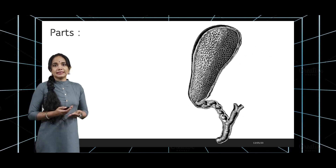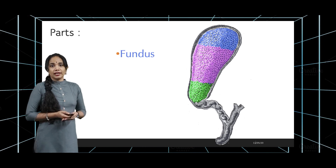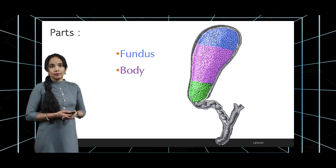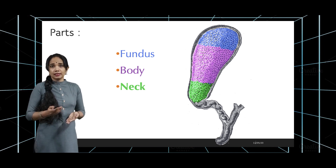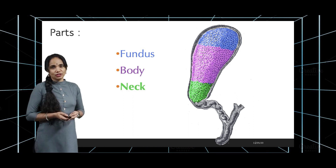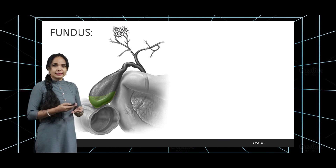The gallbladder basically has three parts: an upper projected sac-like part called the fundus, a major part called the body, and towards where it continues as the cystic duct, it becomes the neck. Let's see a few features of each of them.